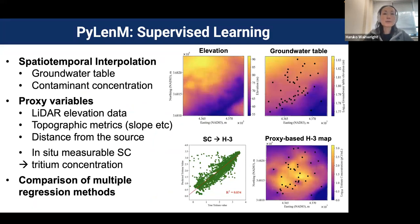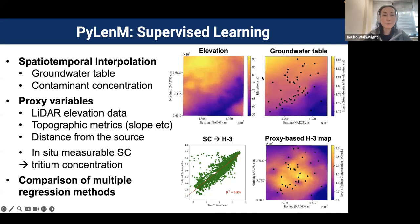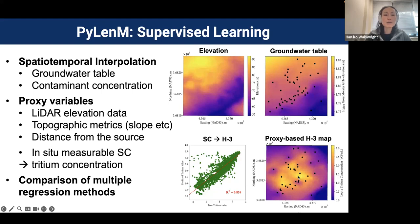For example, supervised learning is used for spatial interpolation. If we want to map the groundwater table, we can't see it at the surface, so we sample at discrete points, but elevation is a good proxy. We combine point measurements and elevation to estimate the groundwater table much more accurately. Similarly, tritium contaminant concentration shows a good correlation with specific conductance, which we can measure in-situ, allowing us to map contaminant concentration over space based on in-situ measurable variables.